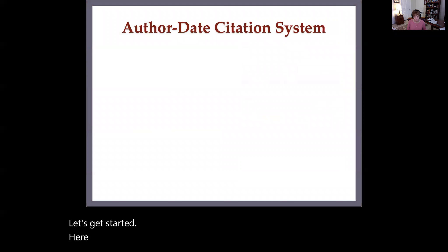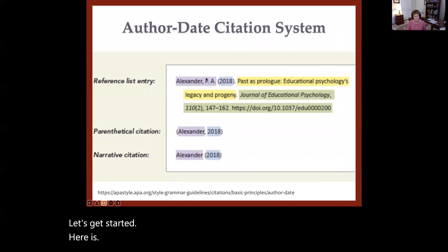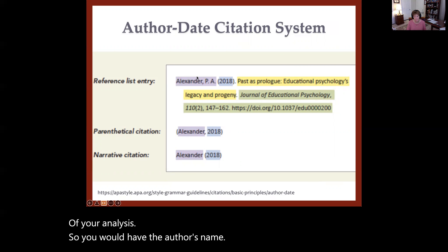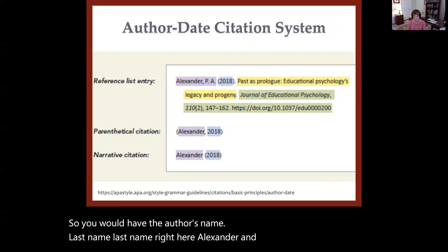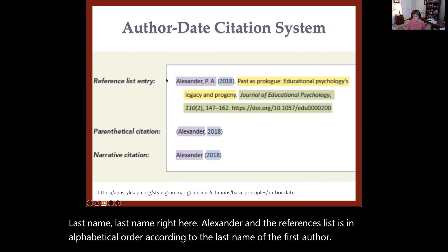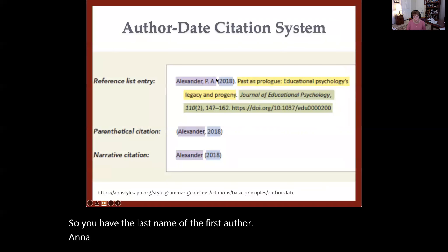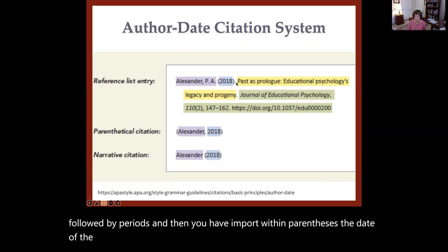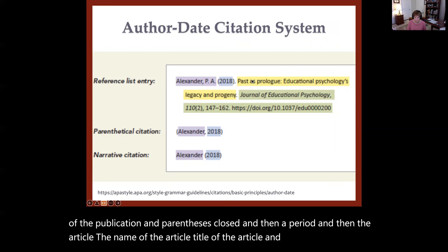Here is what a source would look like on a references page. The references page is at the end of your analysis. You have the author's last name — Alexander, for example — and the references list is in alphabetical order by the last name of the first author. Then a comma, followed by just the initials of the first and middle name with periods. Then in parentheses, the date of publication, followed by a period. Then the title of the article.